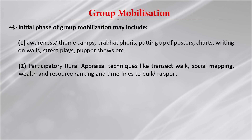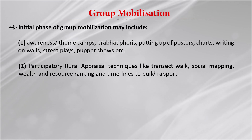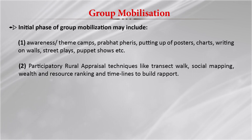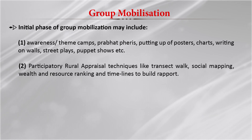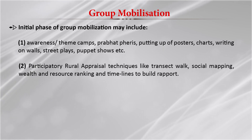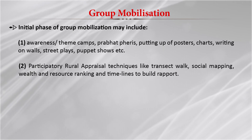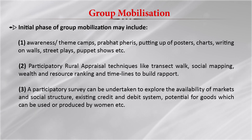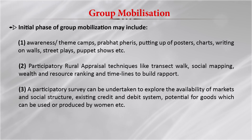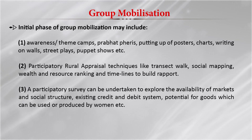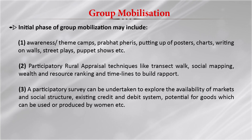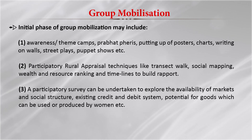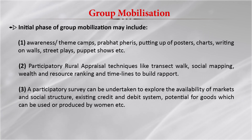In transect walks, people go around and try to find places which are beneficial, important, and useful for the society. Then there is social mapping, where communities are divided by their living standards, economic status, and educational status. Wealth and resource ranking and timelines are used to build rapport between members. Then you have participatory surveys to explore availability of markets, social structure, existing credit and debit systems, and potential for goods produced by women, such as bamboo weaving.